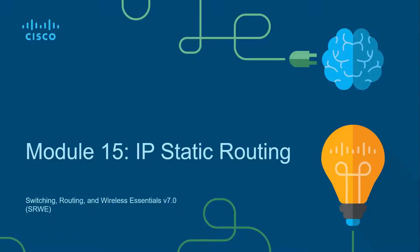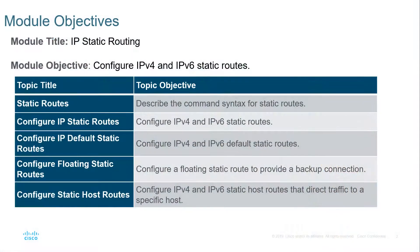Module 15 is about IP static routing. We're going to be covering static routes, configuring static routes, setting up default static routes, floating static routes, and host static routes. There's a lot we can do with static routes, and sometimes even if we're dealing with a dynamic network, we actually do want static routes depending on circumstances. That's why we have to cover this material.